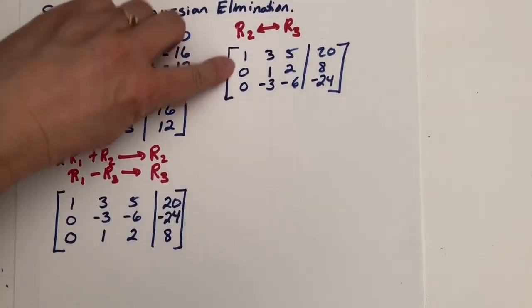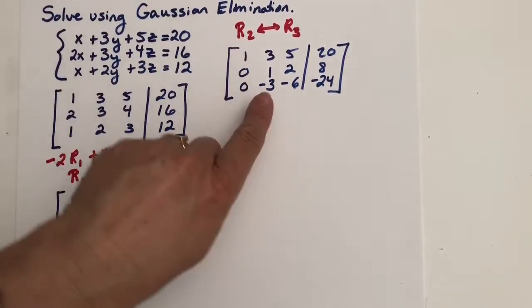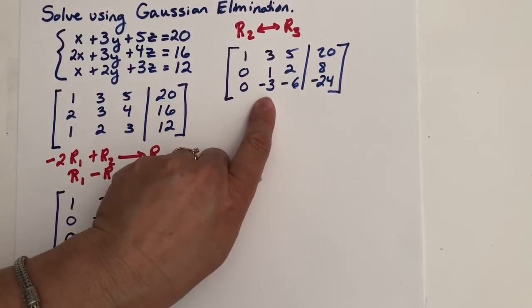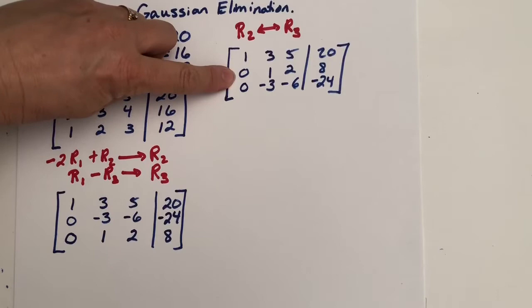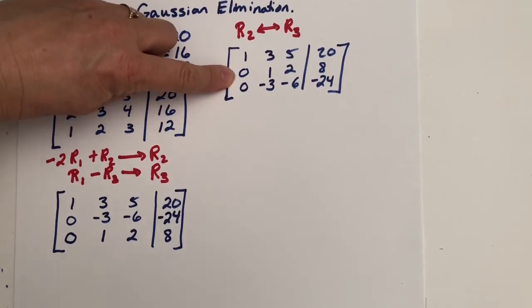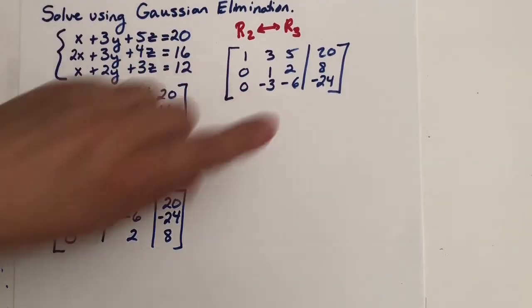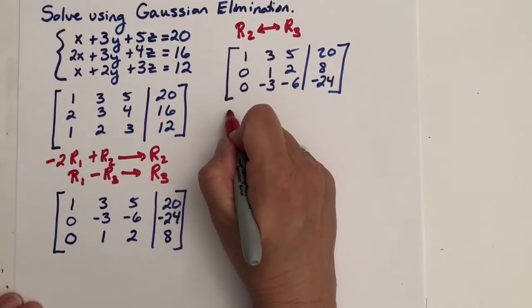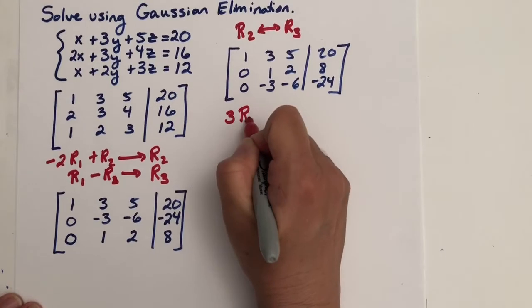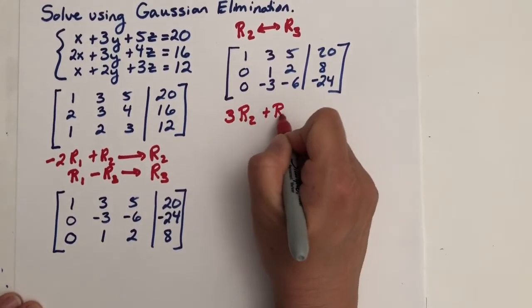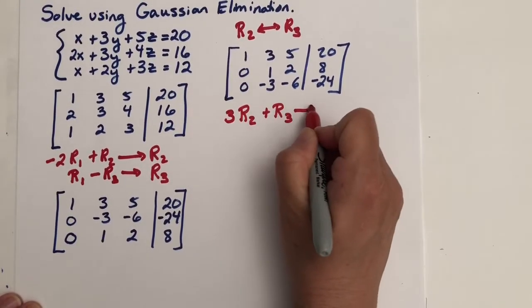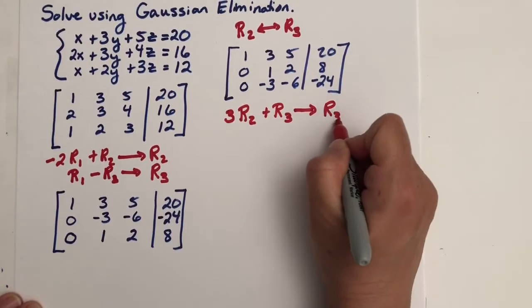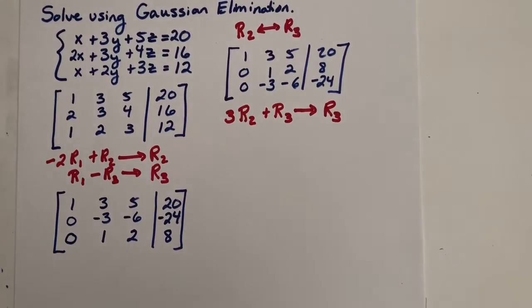So I have my 1, zeros beneath. I have my 1 and my next step, I need a 0 here. Notice if we multiply row 2 by positive 3 and add it, we'll get the 0 that we need here. So we're going to multiply 3 times row 2. We're going to add it to row 3 and we're going to put the result in row 3. So here we go.